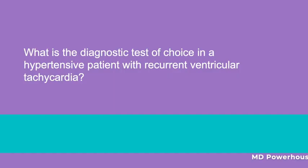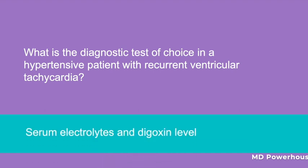What is the diagnostic test of choice in a hypertensive patient with recurrent ventricular tachycardia? Serum electrolytes and digoxin levels. Recall that patients who are hypertensive can take medications that can cause electrolyte abnormalities and predispose them to developing arrhythmias.